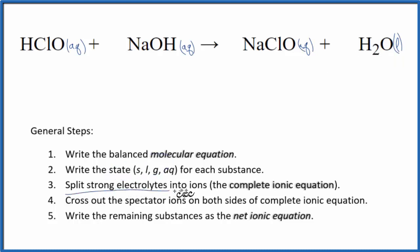Now we have our states and can split the strong electrolytes into their ions. This will give us a complete ionic equation. HClO, we said that's a weak acid, so it's not a strong electrolyte. It's not a strong acid, so we're going to put HClO. We won't split it apart.